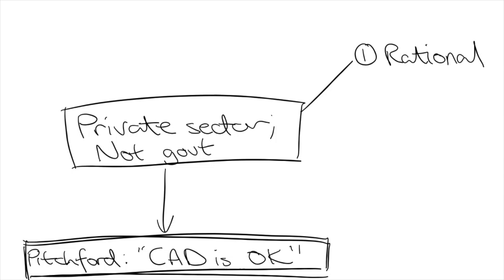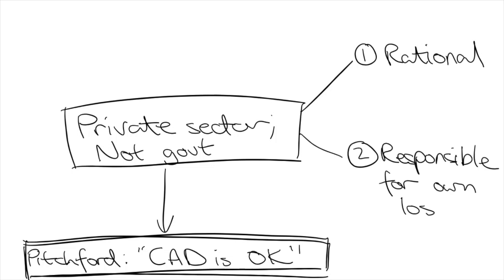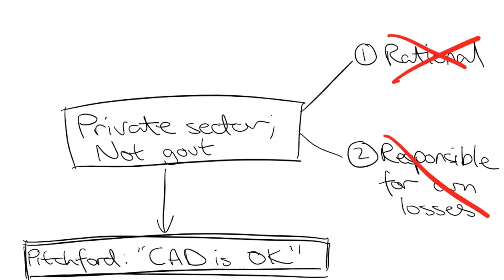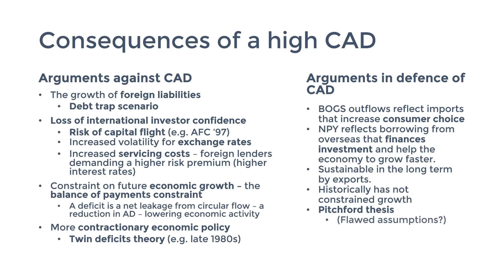The second assumption is that even if the private sector makes a bad investment, they themselves bear the cost. If the government's investments fell through, it's the taxpayers whose resources are wasted. However, you could argue against these assumptions. The US housing crisis that caused the GFC in the late 2000s was arguably caused by irrational or misinformed private sector investments, and governments did have to use taxpayer funds to bail out large financial institutions to prevent the entire financial system from collapsing — debunking both assumptions.